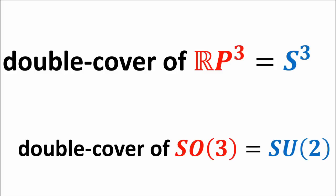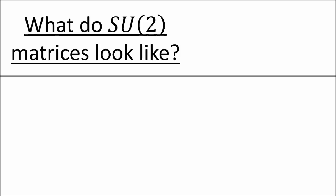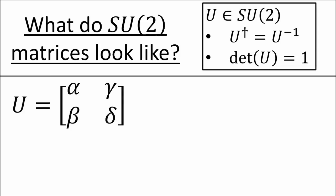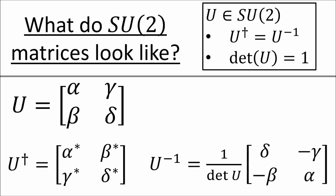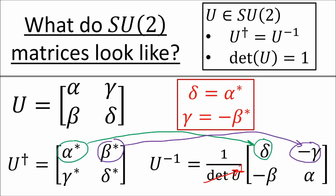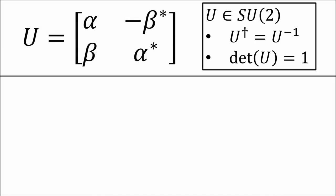So what does this have to do with SU2 matrices being the double cover of SO3 matrices? Well, it turns out that SU2 is shaped like the three-sphere, and SO3 is shaped like the real projective three-space. Let's take a 2x2 matrix with complex entries alpha, beta, gamma, delta. If this matrix is unitary, it means the matrix's Hermitian conjugate is equal to its inverse. Taking the Hermitian conjugate is just the complex conjugate transpose. The formula for the inverse of a 2x2 matrix is well known. If the matrix is special, this means the determinant equals plus one. For special unitary 2x2 matrices, we end up with gamma equals negative beta complex conjugate, and delta equals alpha complex conjugate. So this is the form of an SU2 matrix, defined by two complex numbers, alpha and beta.